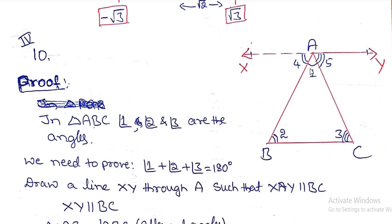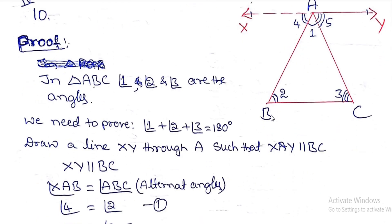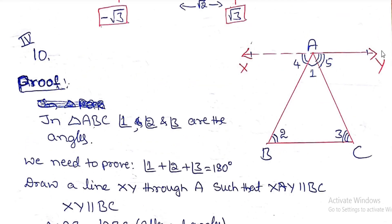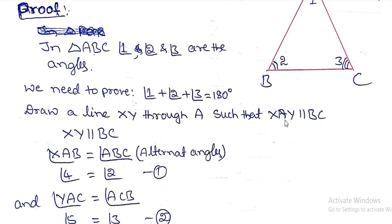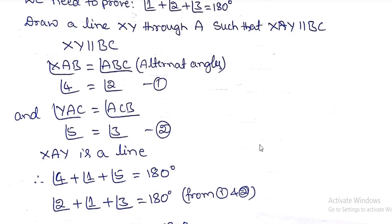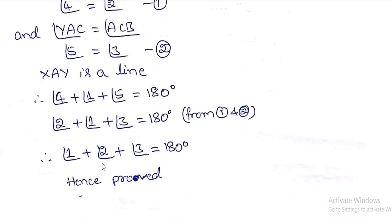Now XY is a straight line, so angle 4 + angle 1 + angle 5 = 180 degrees. Substituting angle 4 = angle 2 and angle 5 = angle 3: angle 1 + angle 2 + angle 3 = 180 degrees. Therefore the sum of the three angles of the triangle is 180 degrees. That completes the proof. This is the 9th standard FA1 question paper with key answers.